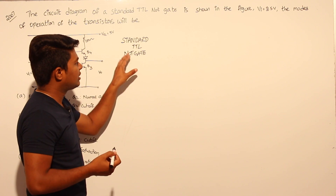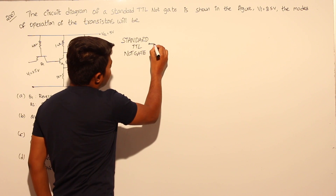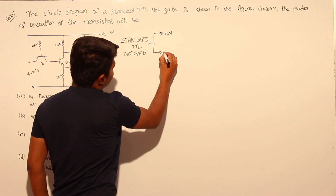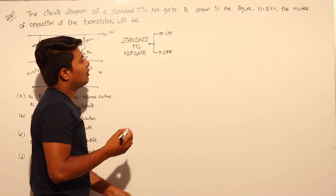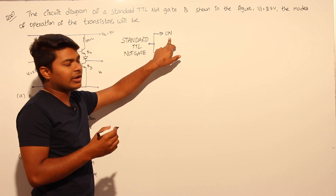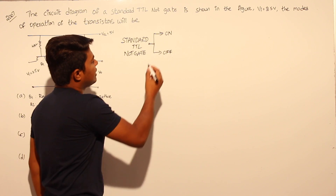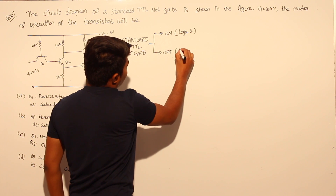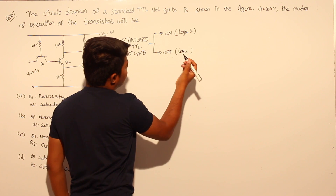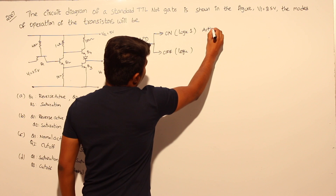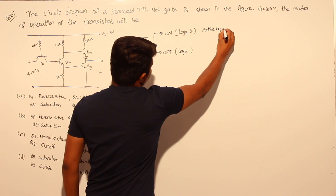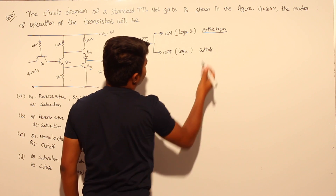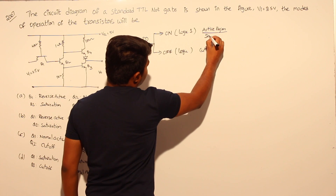For a standard TTL NOT gate, there are two possibilities: on state and off state. Whenever you apply logic 1 (active high input), it is in the on state, which corresponds to the active region or saturation region. Whenever you apply logic 0, it is in the off state, which is the cutoff region.